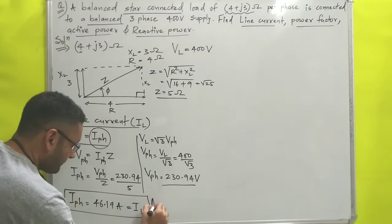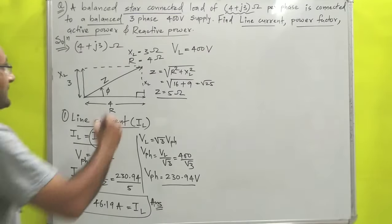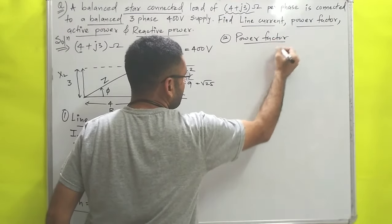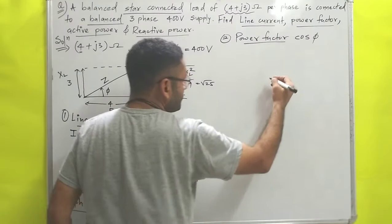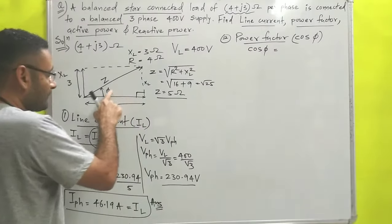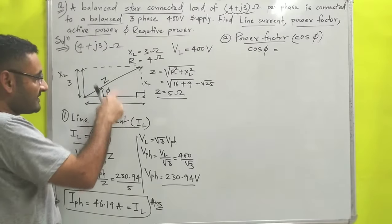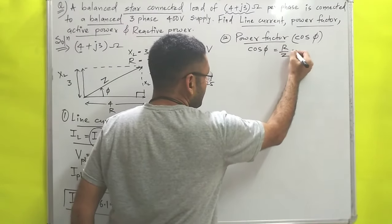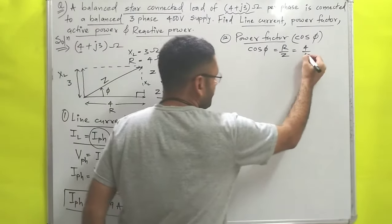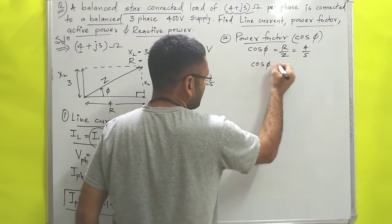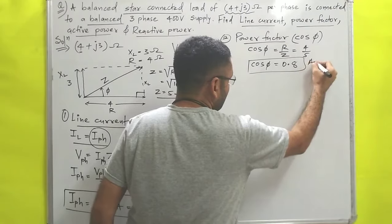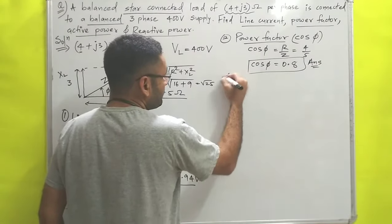The second question is power factor, denoted as cos φ. From the impedance triangle, cos φ = base / hypotenuse = R / Z = 4 / 5 = 0.8. So the power factor is 0.8. This is answer number two.